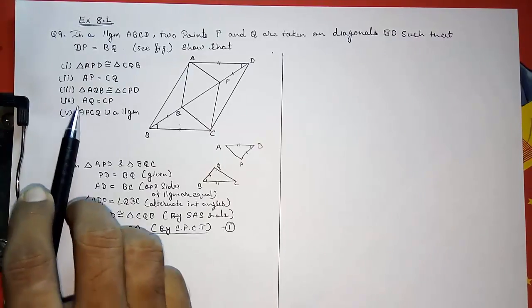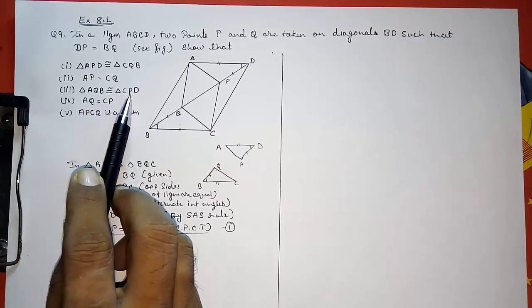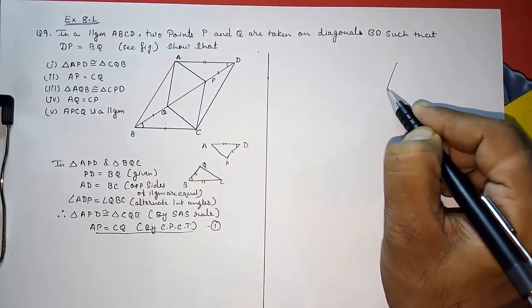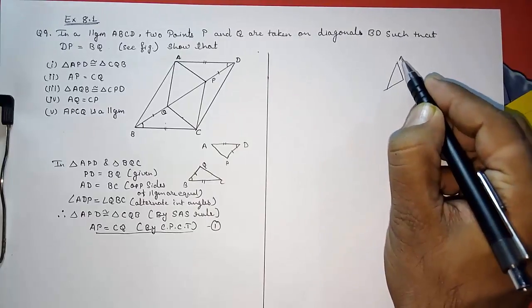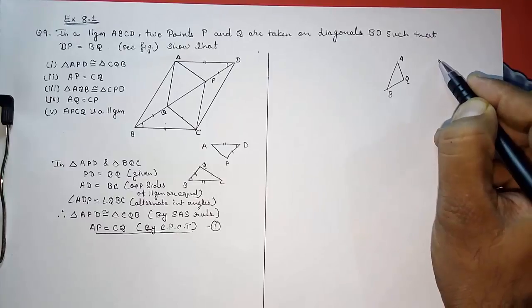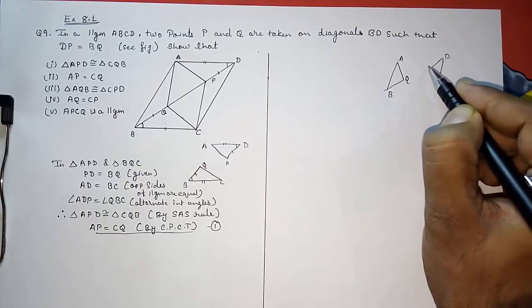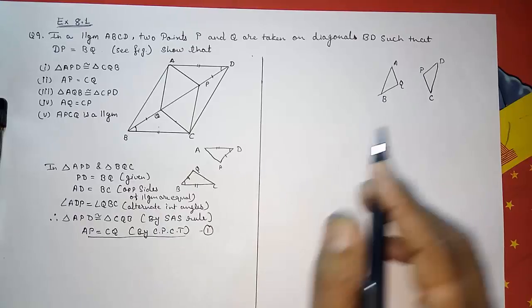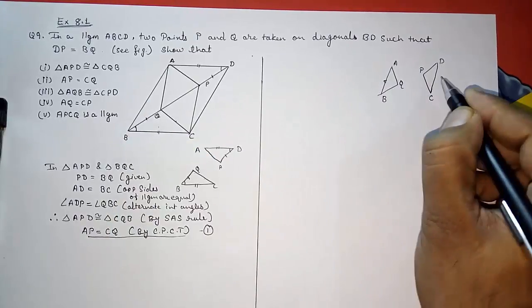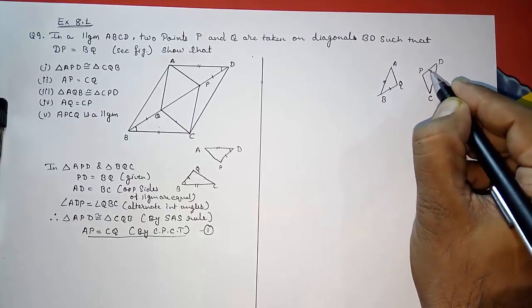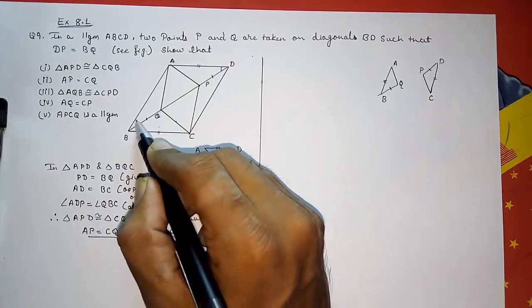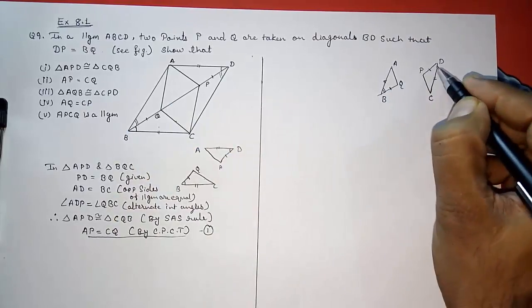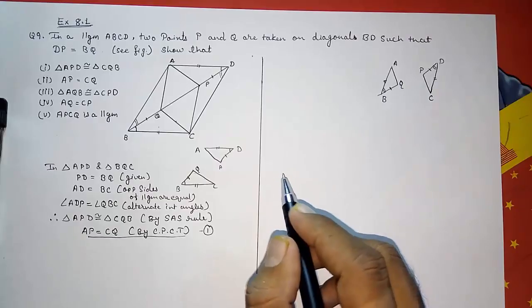Now we have to prove triangle AQB is congruent to triangle CPD. I am drawing those triangles here. Again we can prove this congruent with the same approach: opposite sides are equal, the given condition BQ equals PD, and these two angles are also equal by alternate interior angles.